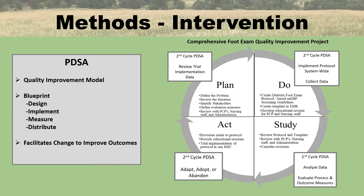During the second cycle, in the Plan phase, we reviewed the trial implementation data. Under the Do phase, we implemented system-wide and then collected the data. Under the Study phase, we analyzed the data and evaluated the process and outcome measures. And finally, we were to either adapt, adopt, or abandon the quality improvement project. I'm happy to report that the stakeholders as well as the quality improvement committee agreed that this was a very worthwhile project and they were very happy with the results and would like to continue it system-wide.